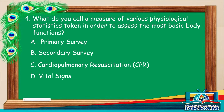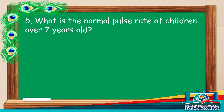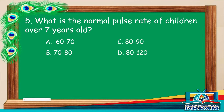What is the normal pulse rate of children over 7 years old? A. 60-70. B. 70-80. C. 80-90. D. 80-120.